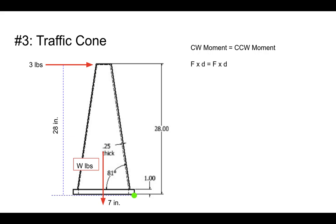In each case, it's force times distance. So three pounds times 28 inches is equal to W pounds times seven inches. A little bit of algebra, and we find out that W must be equal to 12 pounds. The traffic cone has to weigh a minimum of 12 pounds in order to keep from tipping over.